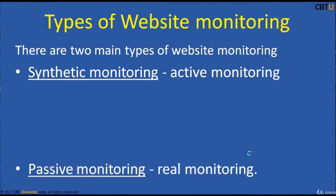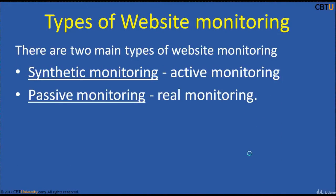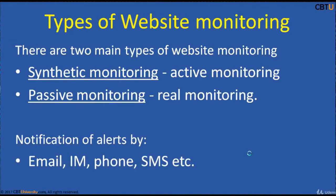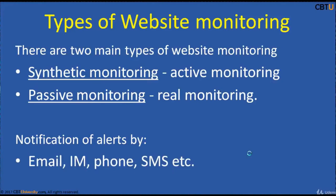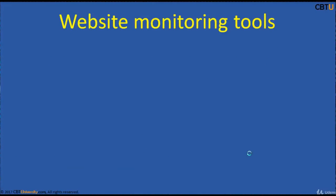There are two types of website monitoring: synthetic monitoring, which is active monitoring, and passive monitoring, which is real-time monitoring. Notifications and alerts are sent by email, instant messaging, cell phone, SMS, etc.